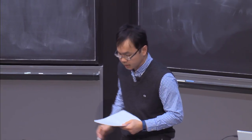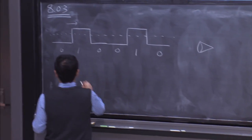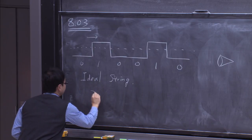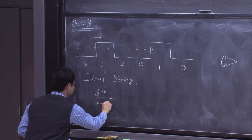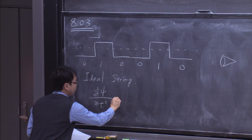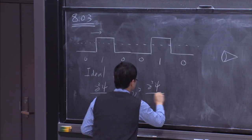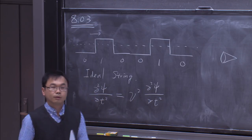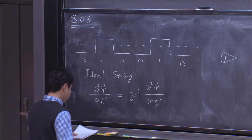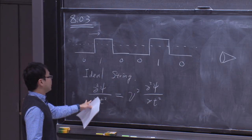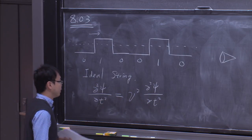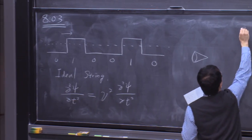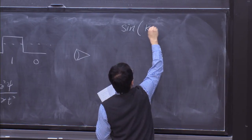For an ideal string obeying the wave equation — ∂²ψ/∂t² = v² ∂²ψ/∂x² — we can derive the dispersion relation. The velocity v is related to the speed of the progressing wave. If I write a harmonic progressing wave in the form sin(kx − ωt), then plugging this into the wave equation gives a fixed relation between k (the wave number) and ω (the angular frequency).